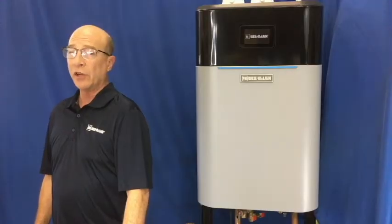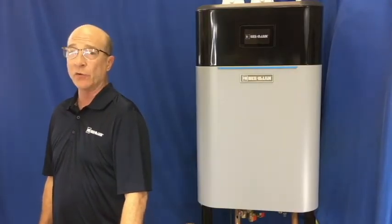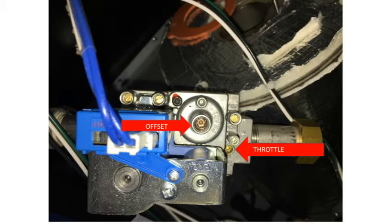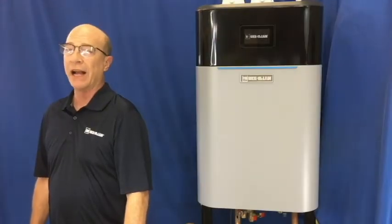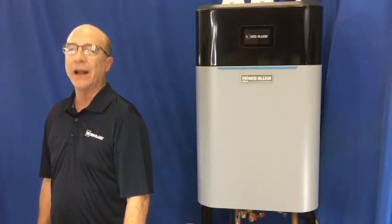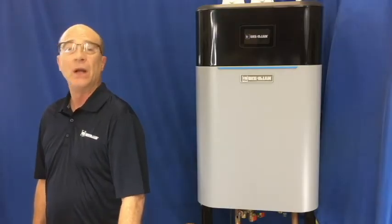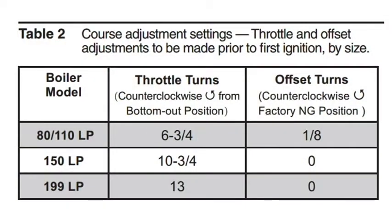Next, we want to locate the throttle screw and the offset screw on the gas valve. Keep in mind, we adjust the throttle in high fire and the offset in low fire. If the unit is running on natural gas, no adjustment is needed on the throttle or offset screw to begin testing. For LP gas, make the needed adjustments if this is the first time firing the boiler. It is very important to make these adjustments before firing the unit on LP gas.